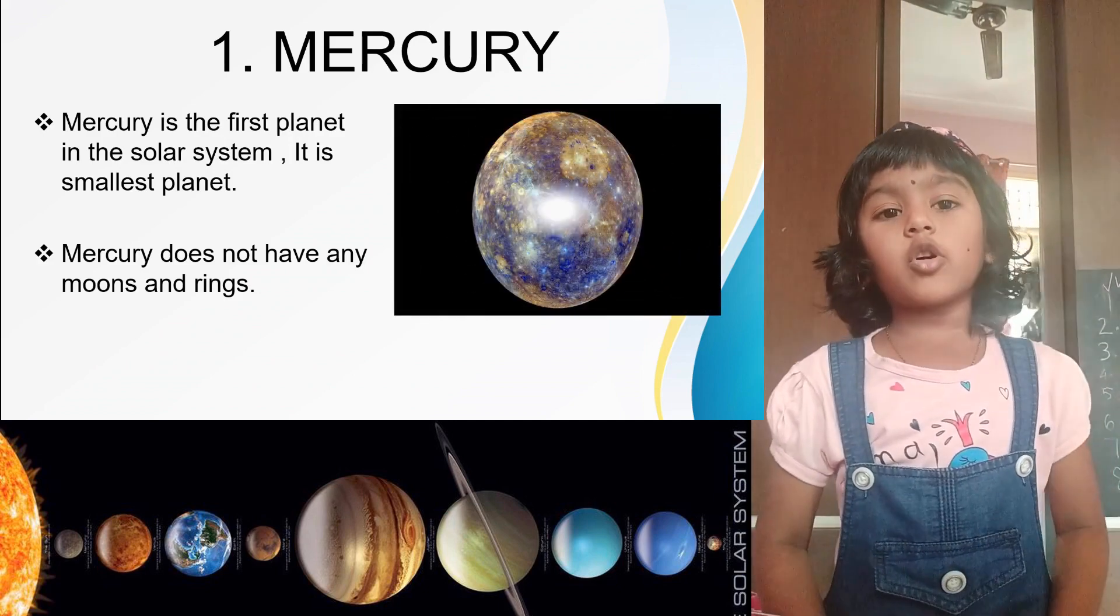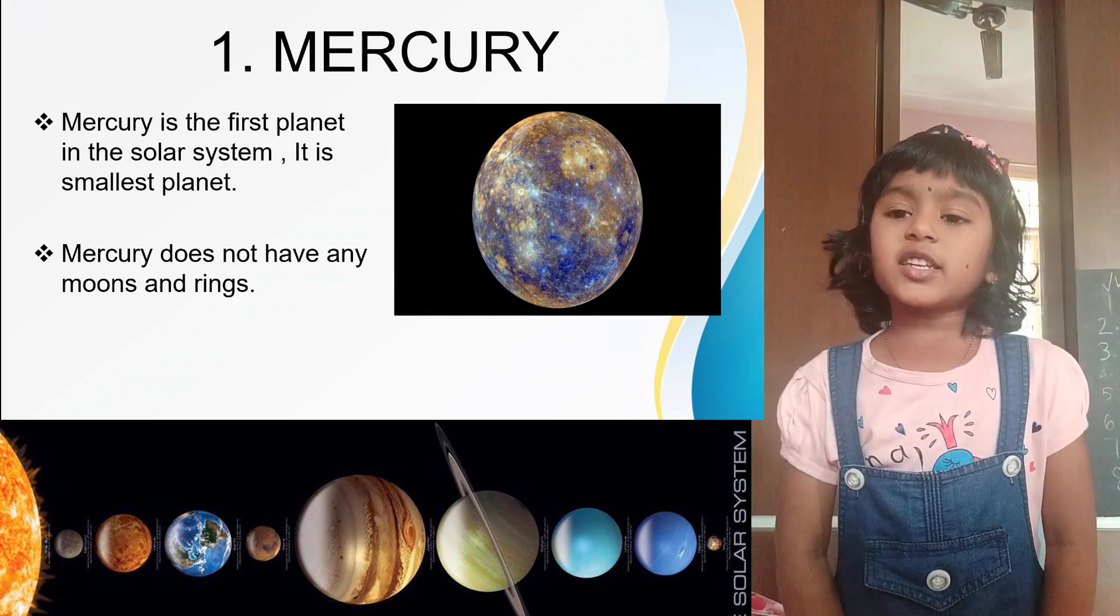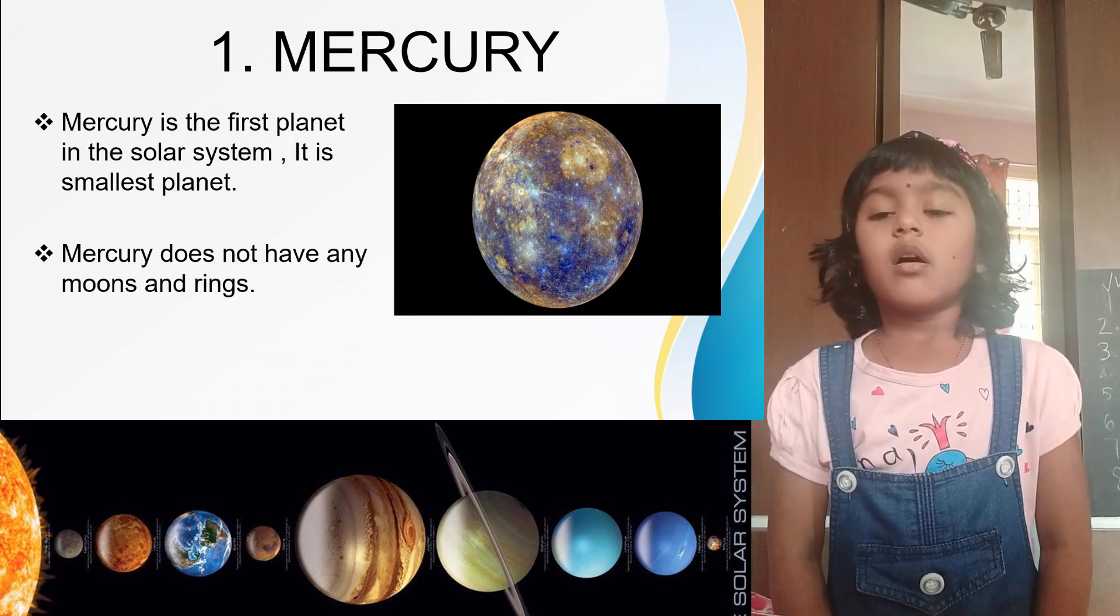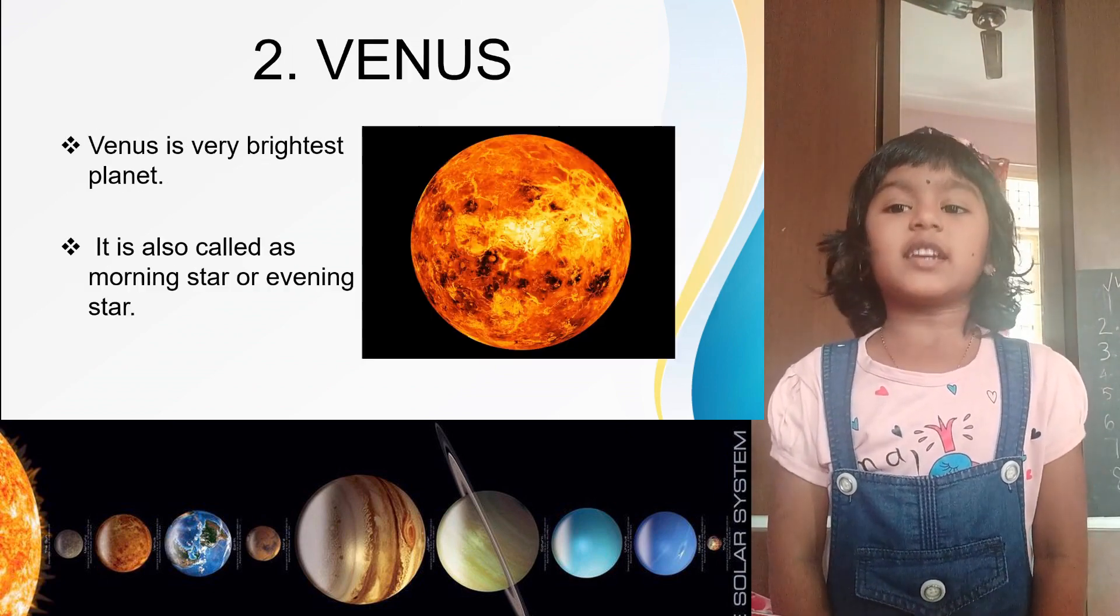Mercury. Mercury is the first planet of the solar system. It is a smaller planet. Mercury does not have any moons and rings.